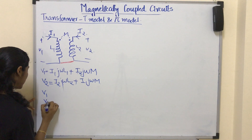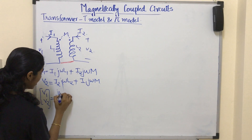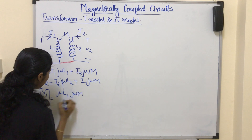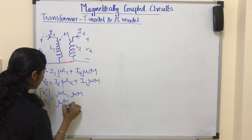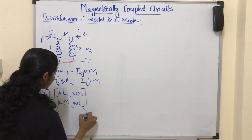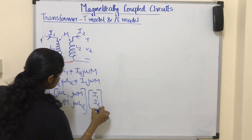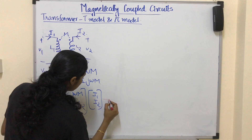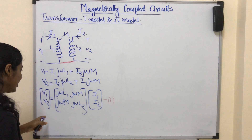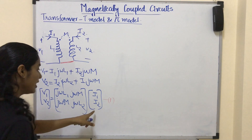In matrix representation: [V1, V2] = [jωL1, jωM; jωM, jωL2] × [I1, I2]. This is our Equation 1.